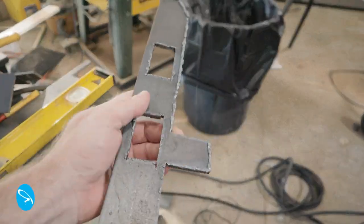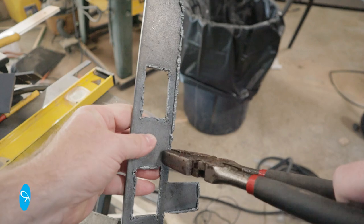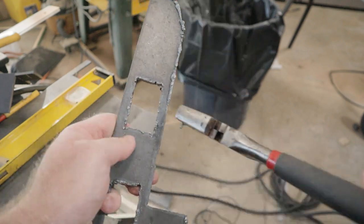Once the parts are cut, there's a bit of cleanup. This junk is called dross. It's the liquid metal that the plasma cutter blows out of the cut. It's easy enough to break off with pliers.